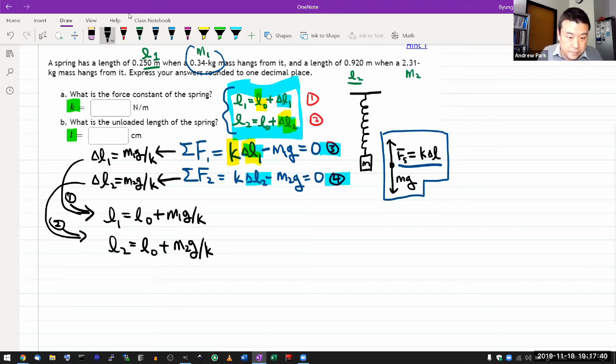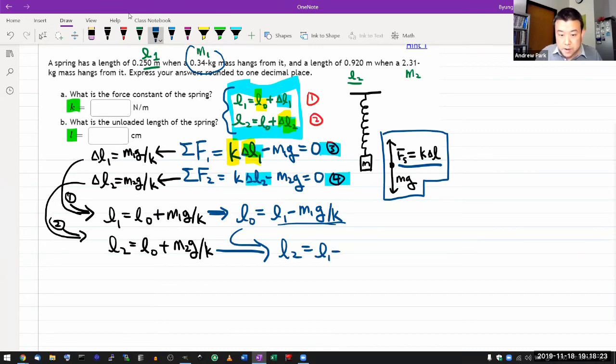I think the straightforward thing to do is solve one of them for L0, the equilibrium length, and plug that into the other thing that will let me solve for K. Let me solve this for equilibrium length. Equilibrium length equals L1 minus M1 G over K. Plug that into the remaining equation, that will get me L2 equals L1 minus M1 G over K plus M2 G over K.